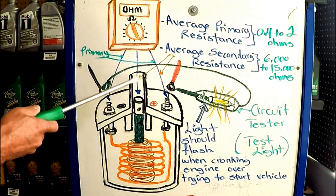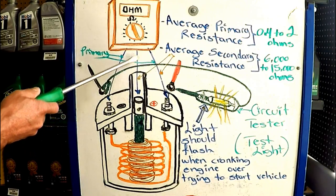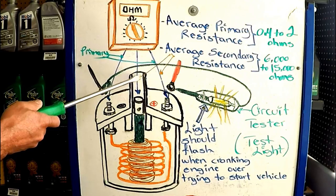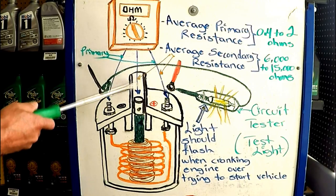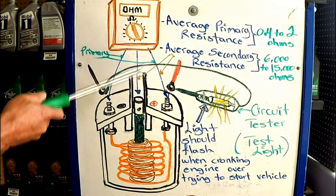When a coil has a weak spark, the vehicle is going to be hard to start, it's going to have hesitation under acceleration because it's not burning all the mixture, and you're probably going to have black smoke coming out of your exhaust pipe.